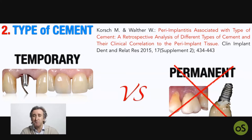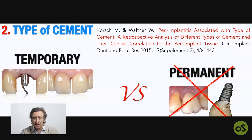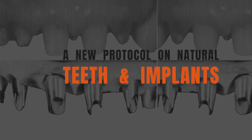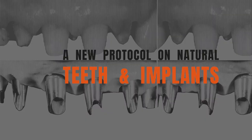Maybe placing a small retraction cord inside the sulcus during cementation will ease the removal of cement remnants and residual. But what I'd like to focus your attention on is the restorative margin location — where do we place the margin, and what do we place the margin for?